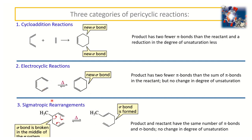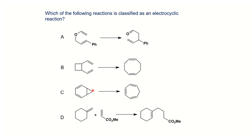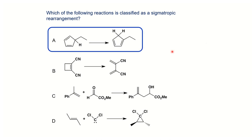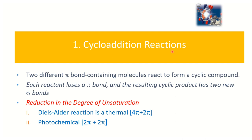Sigmatropic rearrangement is exactly what it sounds like — the species rearranges. A practice question: which of the following is classified as electrocyclic? Remember that in an electrocyclic reaction — whether ring opening or ring closing — there should be no change in the degree of unsaturation. Which one is sigmatropic? The sigmatropic is easy to recognize because it is a rearrangement.